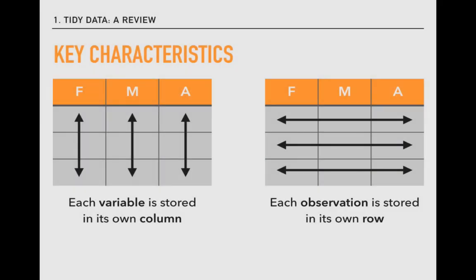Tidy datasets, like families, have similar characteristics. Each variable is stored in its own column, for example, named here F, M, and A, and each observation is stored in its own row.